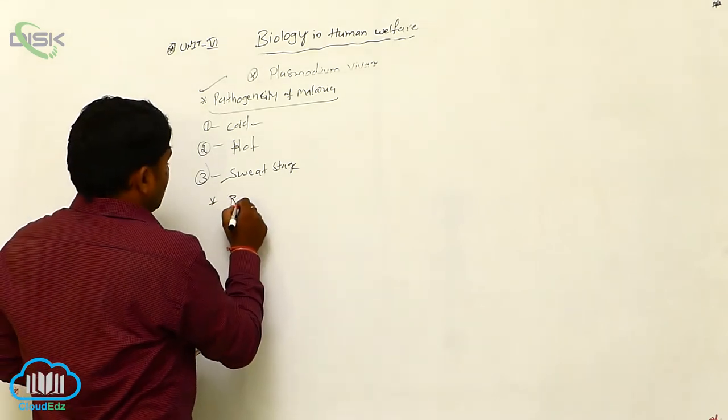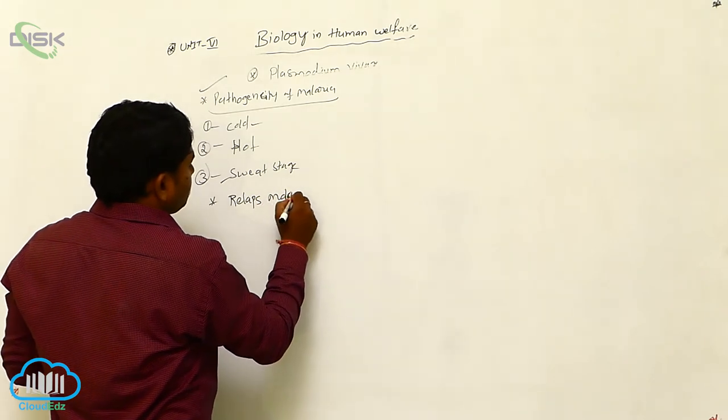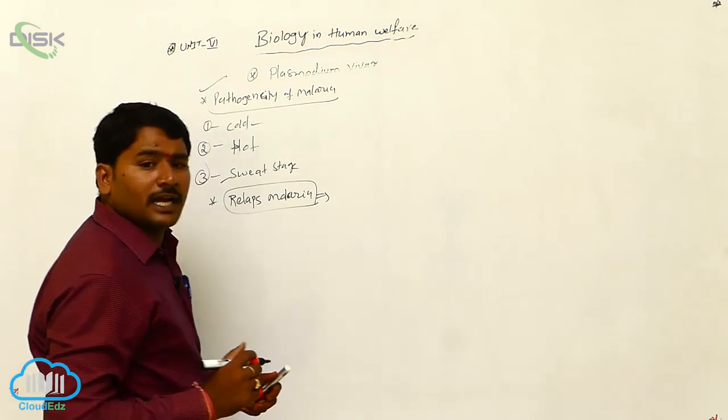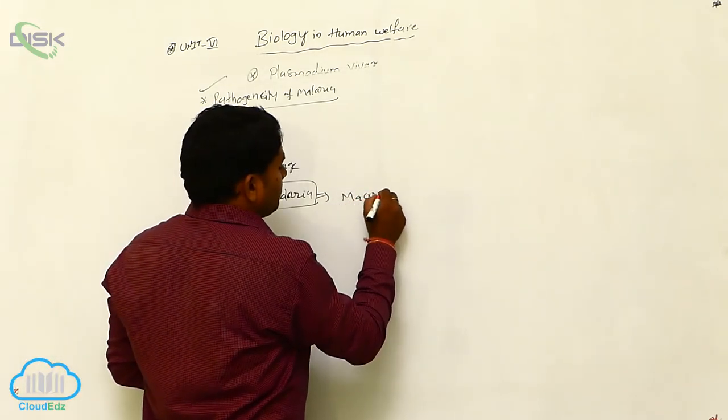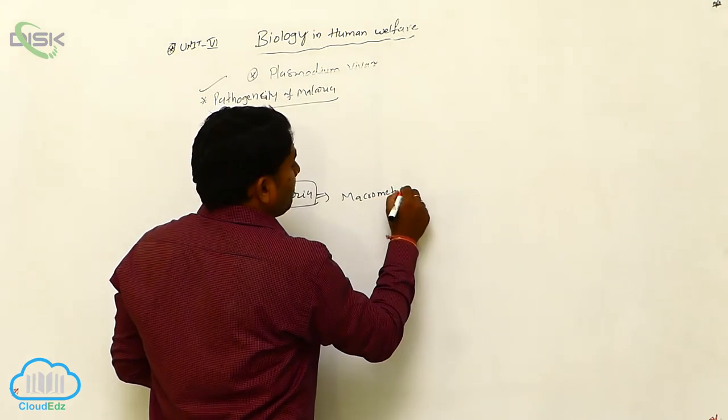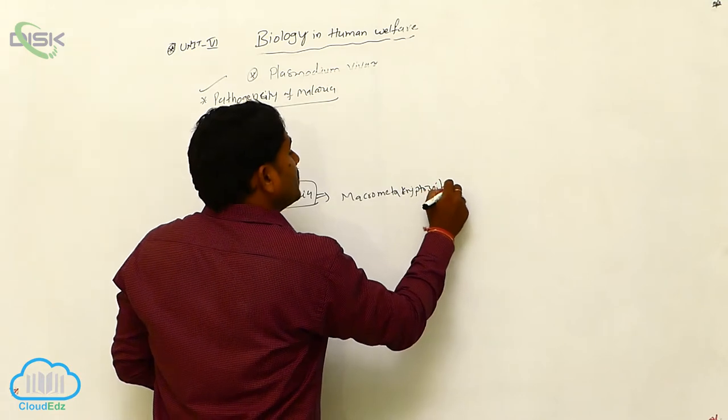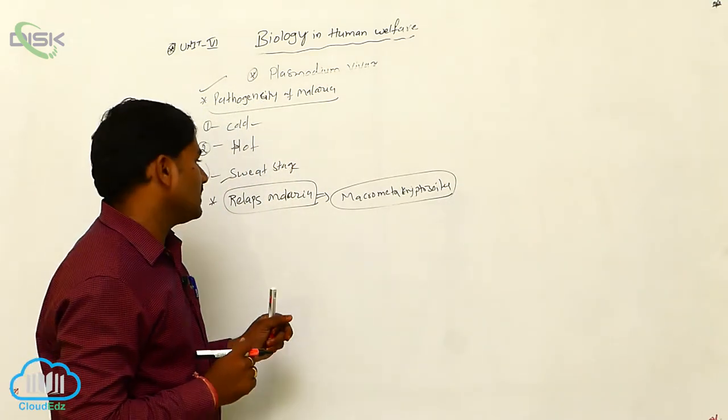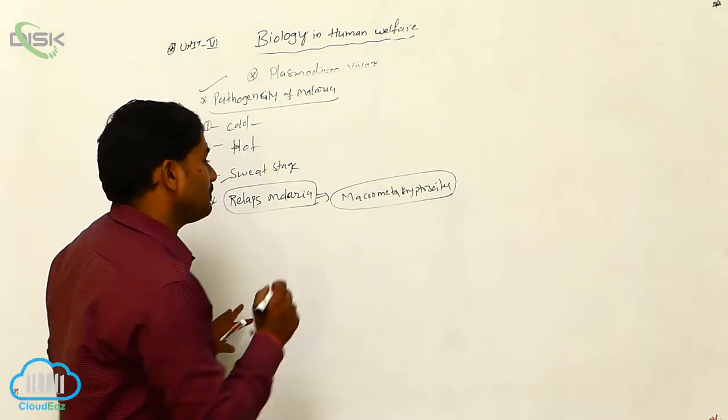Relapse malaria. What is relapse malaria? Sometimes in some individuals, macro metacryptozoids are remained in the liver cells. Sometimes these are called as hypnozoids.